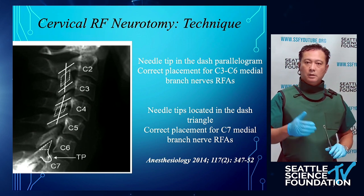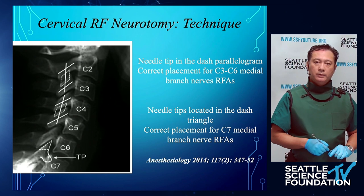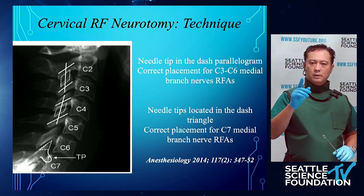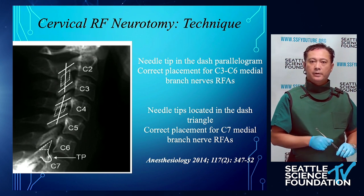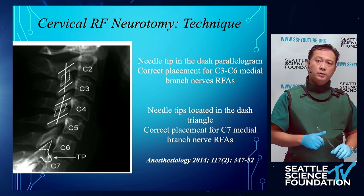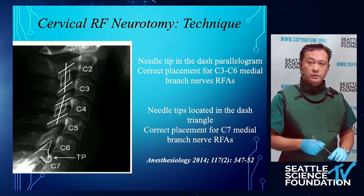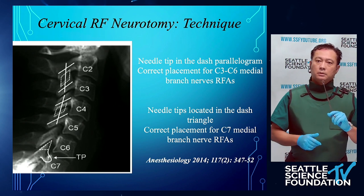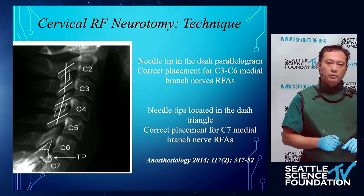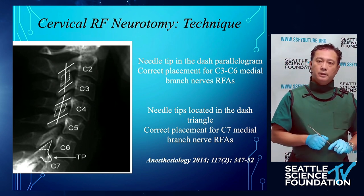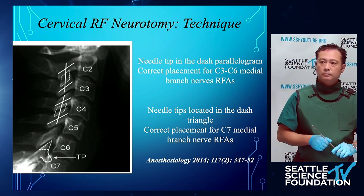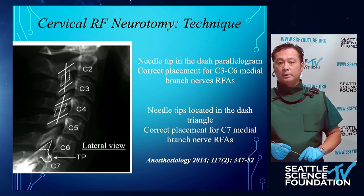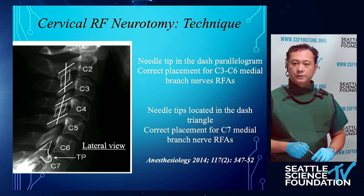Looking at where we're targeting C2-3, C3-4, C4-5, and C5-6 medial branches — the parallelograms depicted are not correct for C3 and C4 medial branches. We're targeting at the crosshairs at the centroid of the articular pillar. For the C2-3 facet joint and the third occipital nerve, the parallelogram is correct. At the C7 medial branch, we're targeting the superior articular process of C7 at the triangle.